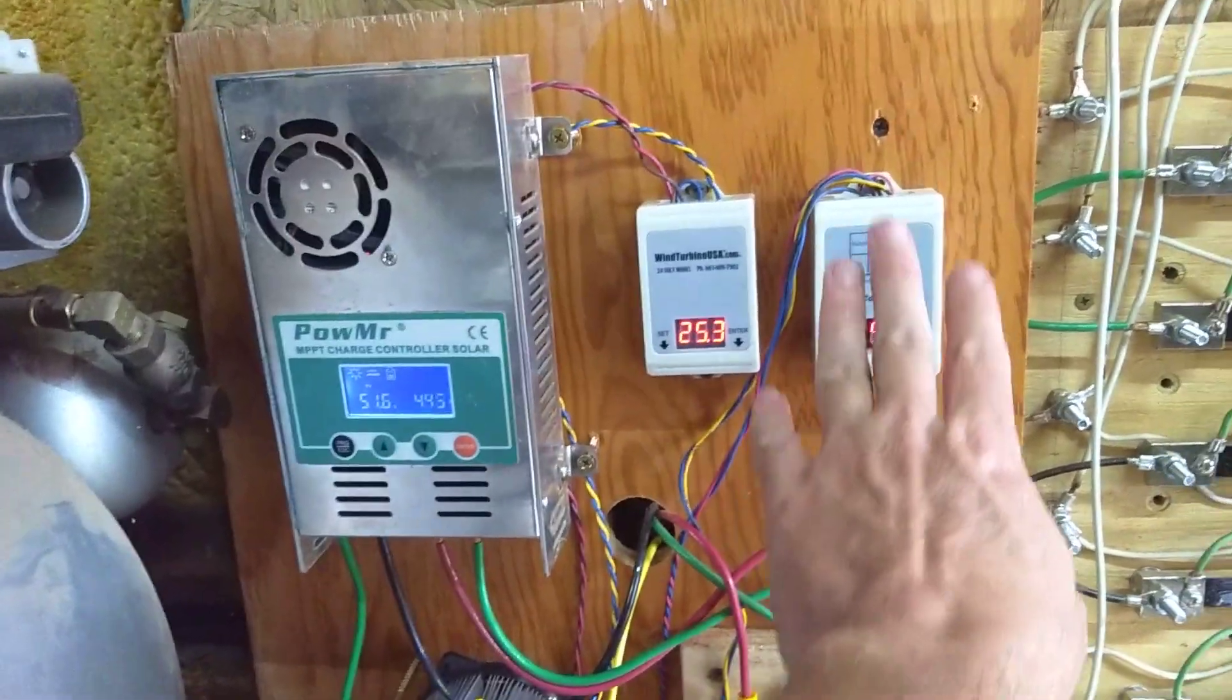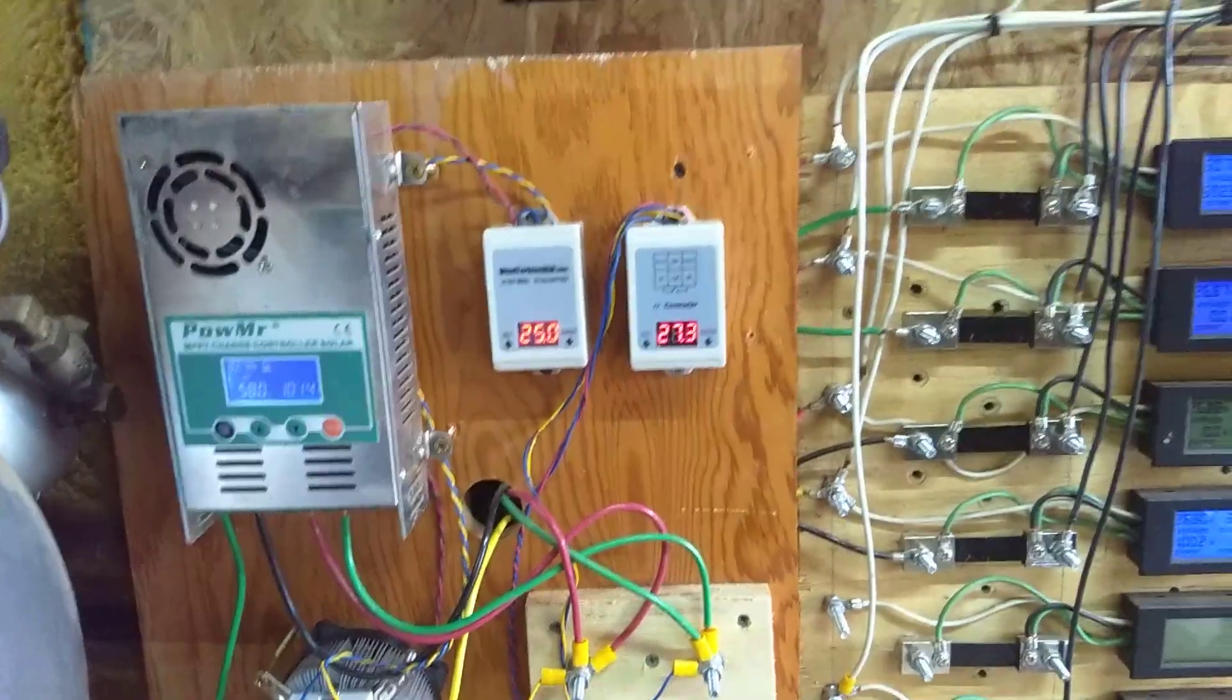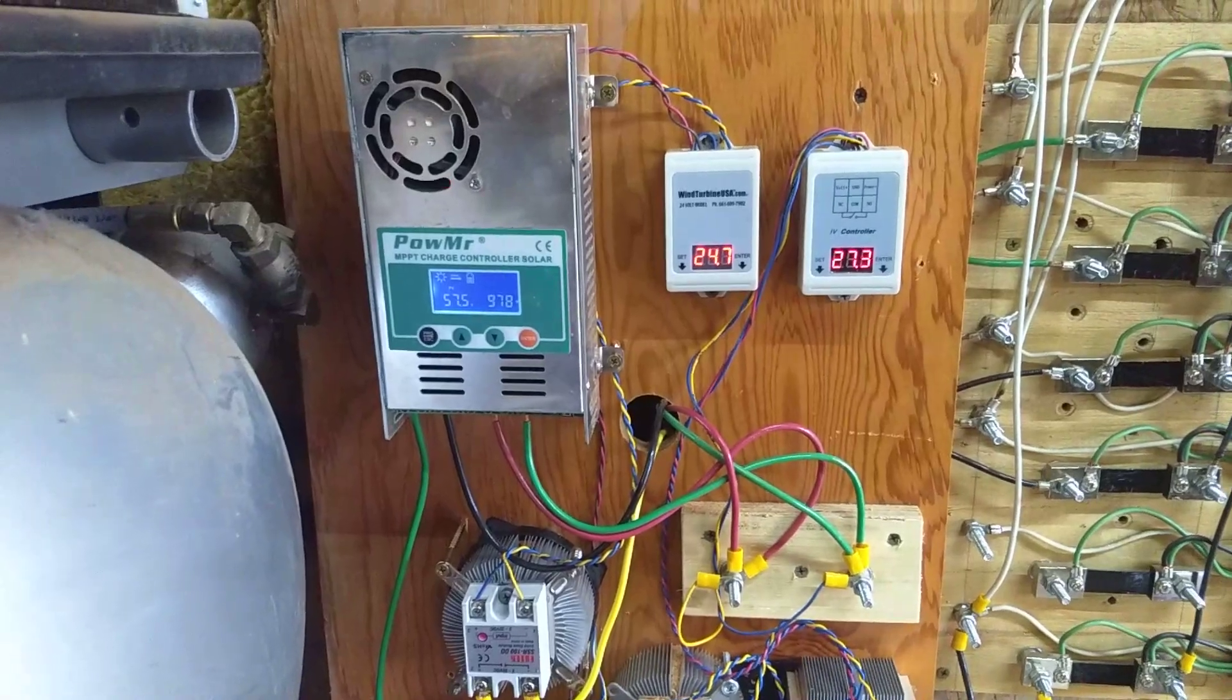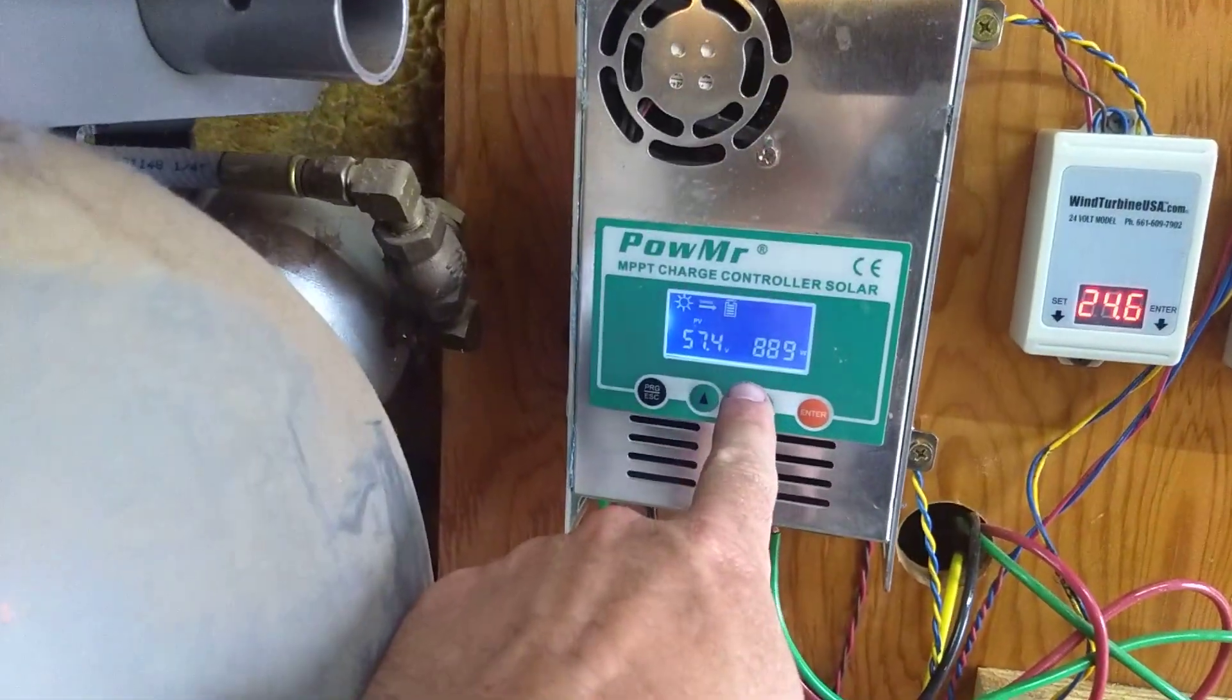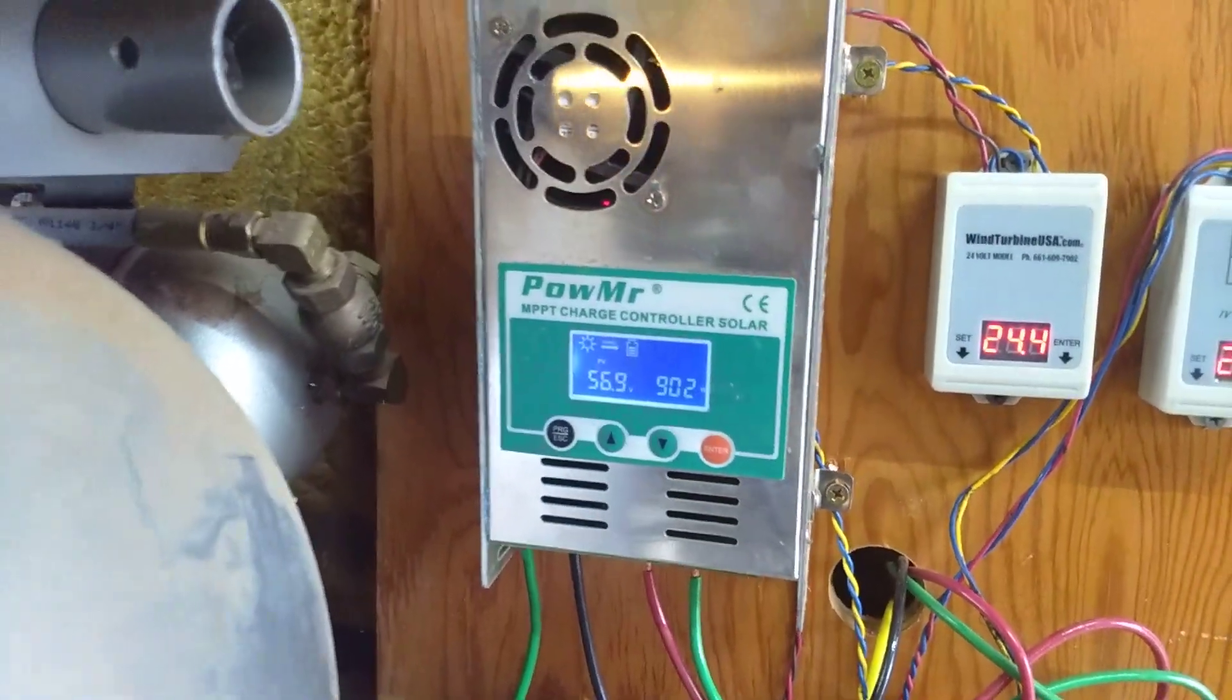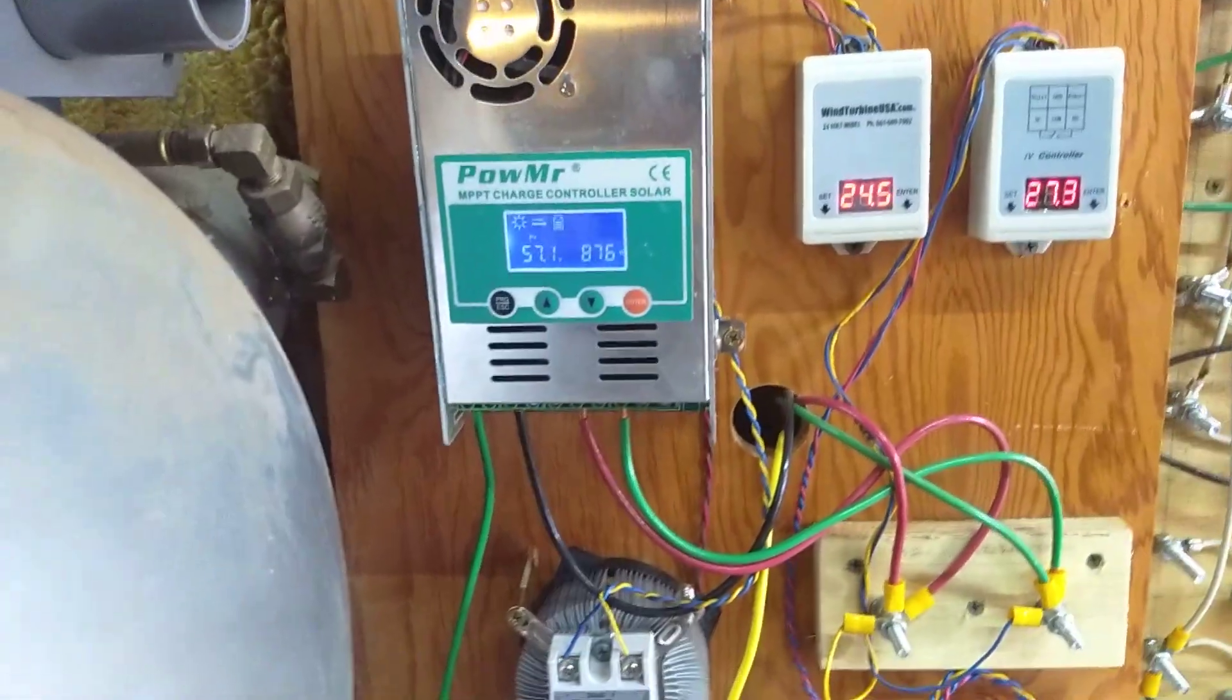And then it runs until it pulls it down to 24.2 volts. And you can see it's actually triggered on right now. And we are moving a thousand watts across to the 24 volt bank.